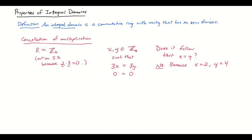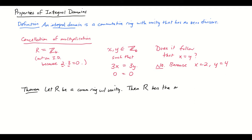So when can I do that? The answer is given exactly by the idea of an integral domain. As long as I have an integral domain — no zero divisors — I can cancel a common factor. We're assuming the scope of our discussion is commutative rings with unity. So here's the theorem: let R be a commutative ring with unity. Then R has the multiplicative cancellation property if and only if R is an integral domain.